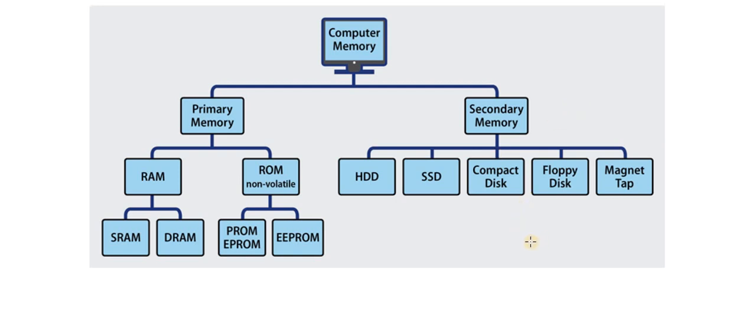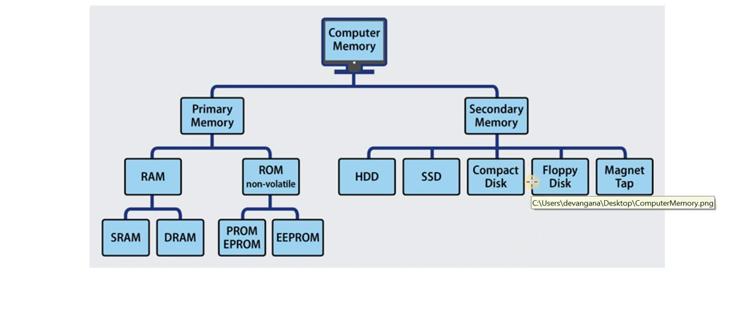Examples of secondary memory include CD-ROM, DVD, pen drive, hard disk, and SSD. Characteristics of secondary memory: also known as external memory, it is non-volatile and permanent. Data is permanently stored even when power is switched off. A computer may run without secondary memory. Secondary memories are slower than primary memory and are mainly magnetic and optical memories.